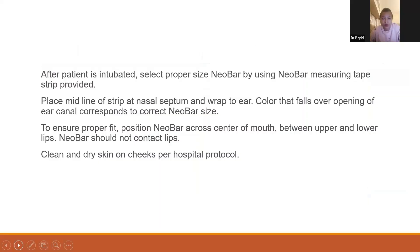After the patient is intubated, we select the proper size Neobar using the Neobar measuring tape strip provided. Place the midline of the strip at the nasal septum and wrap it to the ear. The color that falls over the opening of the ear canal corresponds to the correct Neobar size. To ensure proper fit, position the Neobar across the center of the mouth between the upper and lower lips — the Neobar should not contact the lips. We must prep the skin before applying: clean and dry the skin. Alcohol should not be used as it is an irritant and may interfere with the hydrocolloid tabs. The hydrocolloid tabs must be pre-warmed before use — hold them in your hands for about 60 seconds or under a radiant warmer for about 50 seconds before applying to the baby's face.